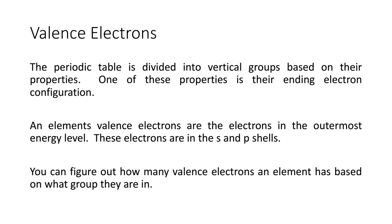If you look at the periodic table, all the ones in group 1 end in S1, all the ones in the second group end in S2. If you pull out your colored periodic table by blocks, you have the S block, the P block, the D block, and the F block. An element's valence electrons are the electrons in the outermost energy level, which means it's the highest number.